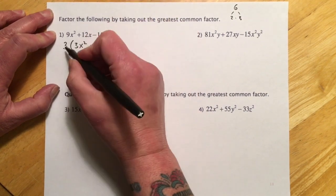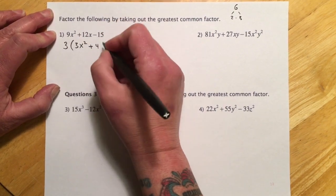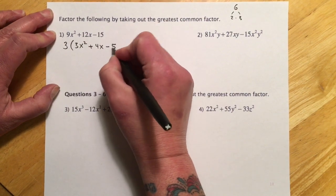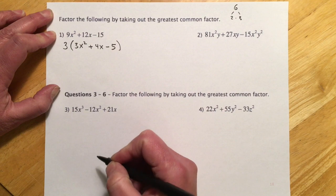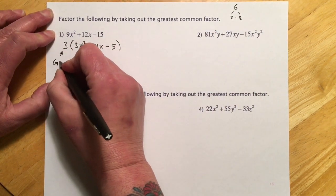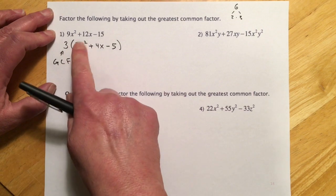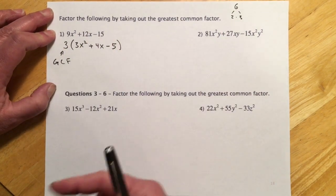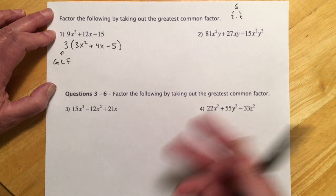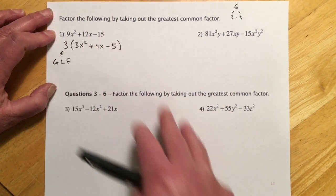Three goes into twelve four times, because three times four makes twelve, so the x is there. Three goes into fifteen five times, and three times negative five gets me that negative fifteen. This is what's called our greatest common factor, or GCF. Greatest common factors are super important because they are the first step of all factoring problems. Not every problem will have a GCF, but every problem you have to look and see if there is one, spot it, and get it out of the way.